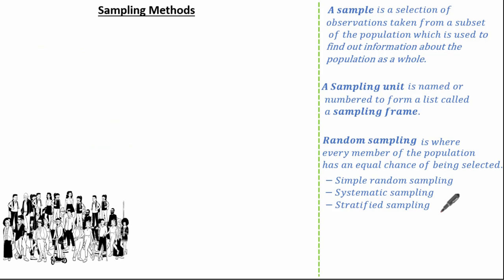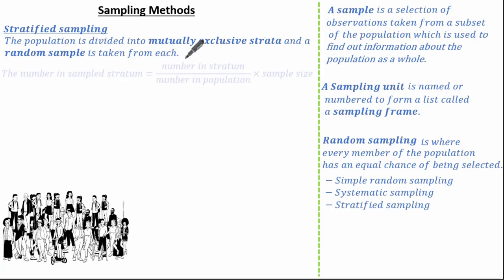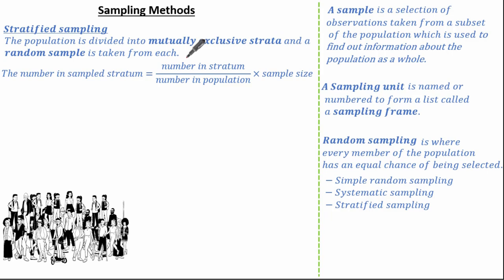Lastly, let's look at stratified sampling. Stratified sampling is where the population is divided into mutually exclusive strata or groups and a random sample is taken from each. The formula to remember is: number in the sampled stratum = (number in the group / number in the population) × sample size.